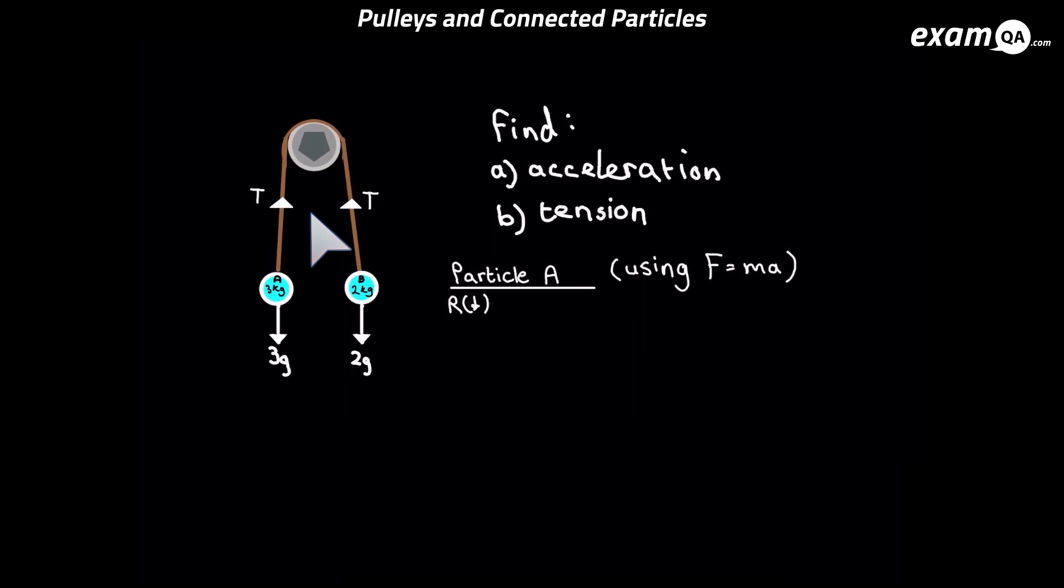We're going to start by looking at particle A. Now we know particle A is going to move downwards since it's heavier, it's got a bigger weight. So we'll make downwards as positive. Particle A has got 3G force downwards, and it's got one opposing force, which is the tension.